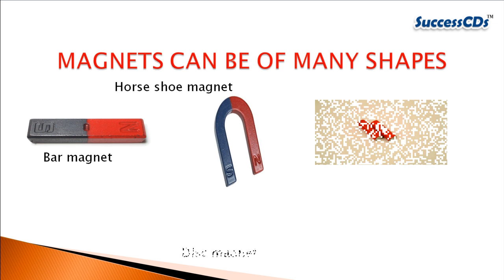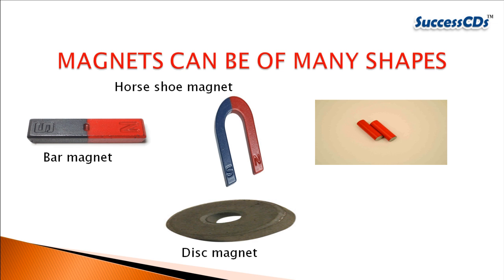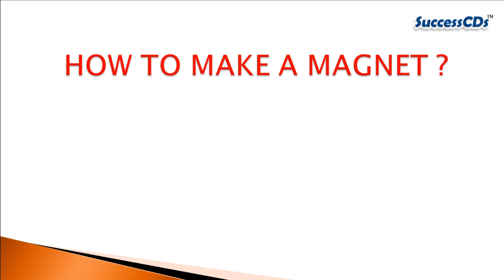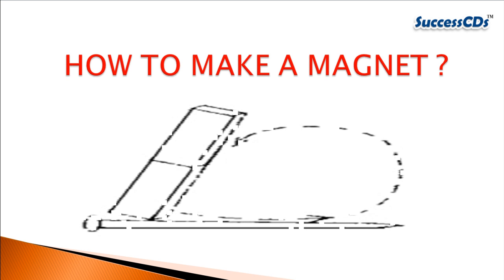Magnets can be of many shapes. Here are some of them: a bar magnet, a horseshoe magnet, a disc-shaped magnet, or a cylindrical magnet.